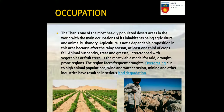The Thar is the most heavily populated desert area in the world, with agriculture and animal husbandry as the main occupations. Agriculture is not reliable here — at least one third of crops fail after the rainy season. Animal husbandry with trees and grasses intercropped with vegetables and fruits is the most viable model for this arid region. The area faces frequent droughts, overgrazing due to high animal population, wind and water erosion, and mining, resulting in serious land degradation.